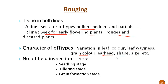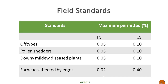Number of field inspections required: there are three field inspections required — first at the seedling stage, second at the tillering stage, and third at the grain formation stage. Three field inspections should be carried out in seed production of pearl millet.